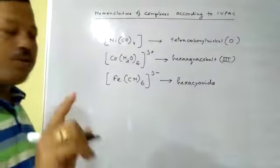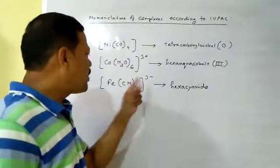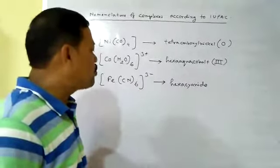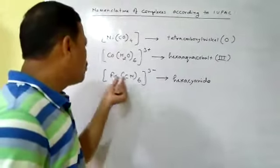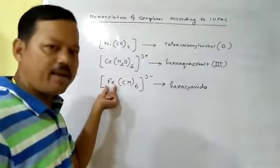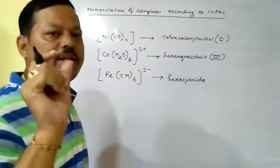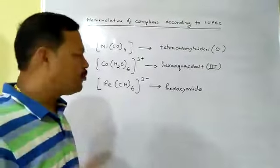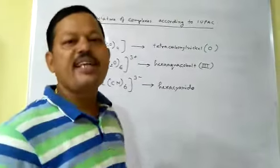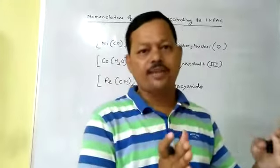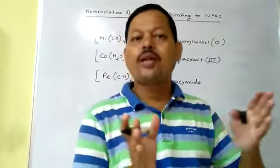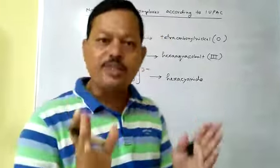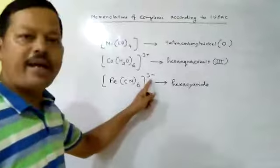There is a rule here: this complex is an anionic complex because it contains a negative charge outside the square bracket. In the case of an anionic complex, when you write the name of the metal, you have to add the suffix '-ate'. For example, if your metal is nickel, you write nickelate. If your metal is cobalt, you write cobaltate. You add the suffix '-ate' only for anionic complexes.